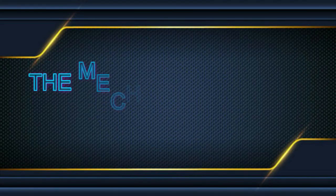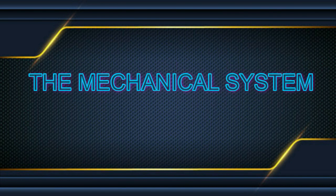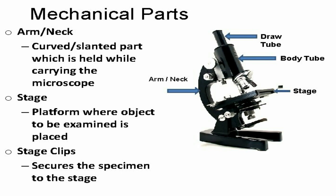The mechanical system consists of the structural parts that hold the specimen and lenses and permit focusing of the image. The tube connects the eyepiece to the objective lenses, while the arm supports the tube and connects it to the base at the bottom of the microscope. The stage is the flat platform where you place your slides, and the stage clips hold them in place.